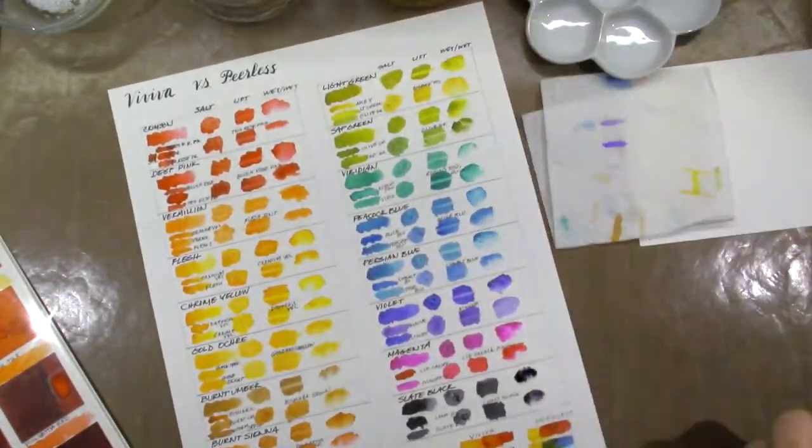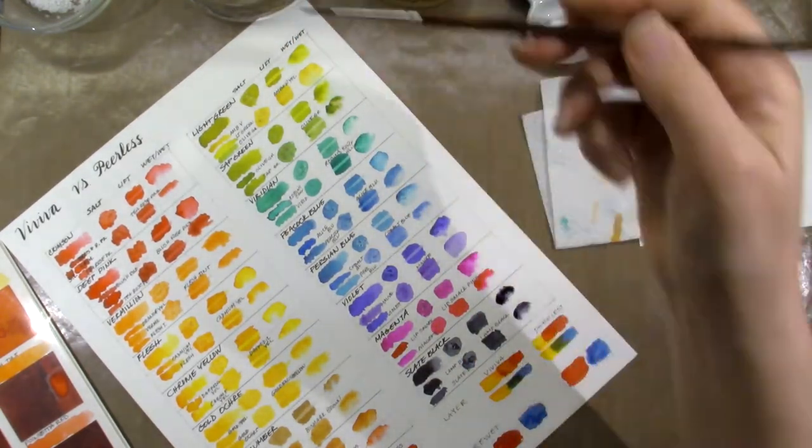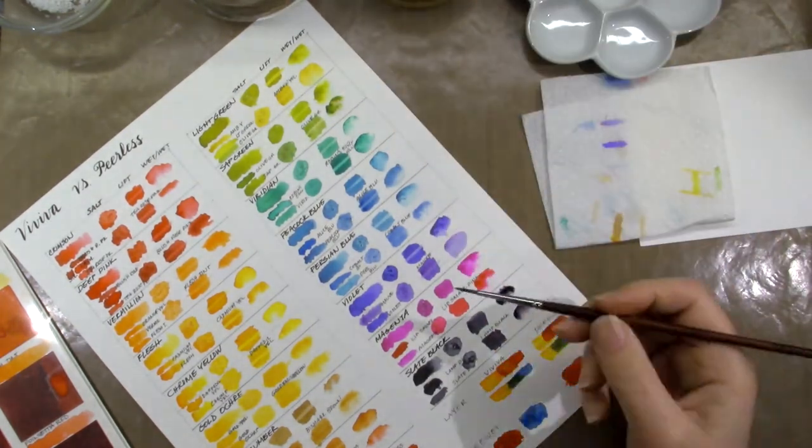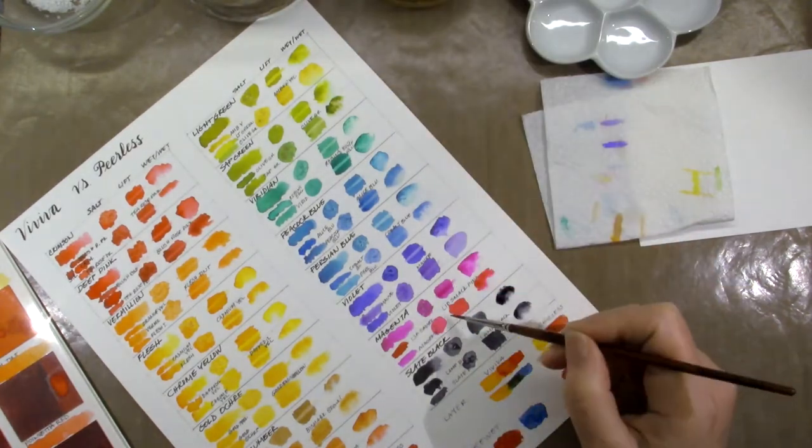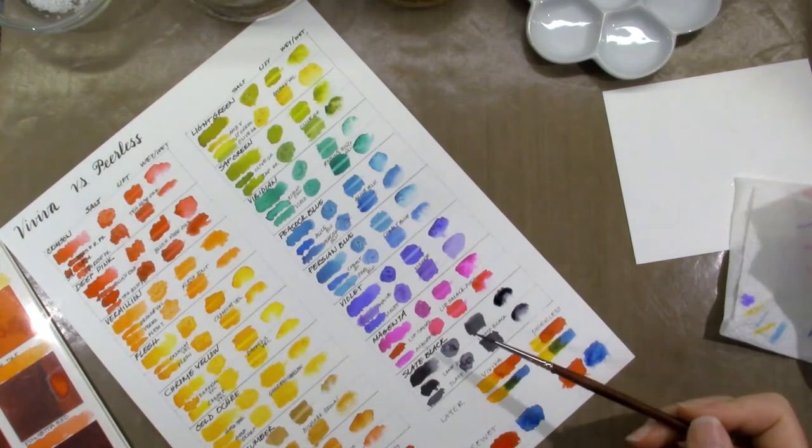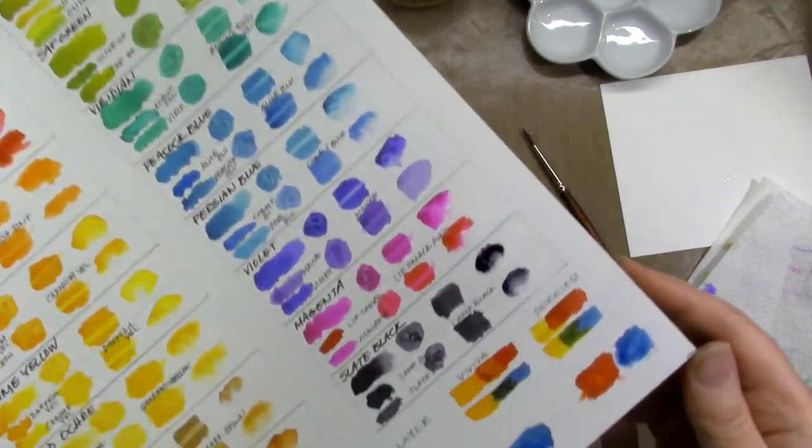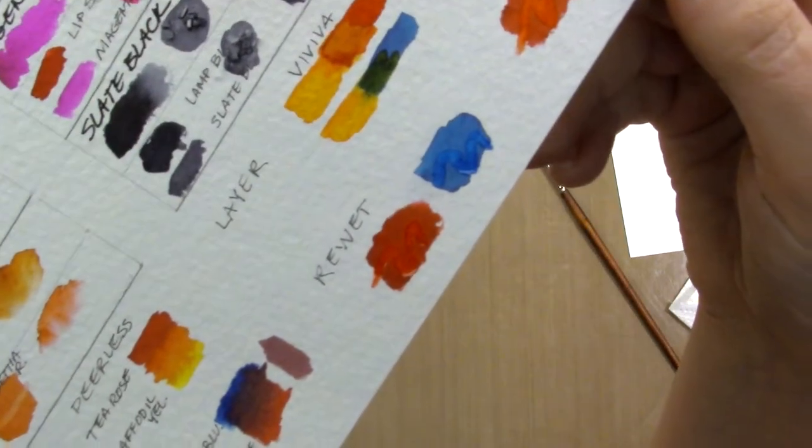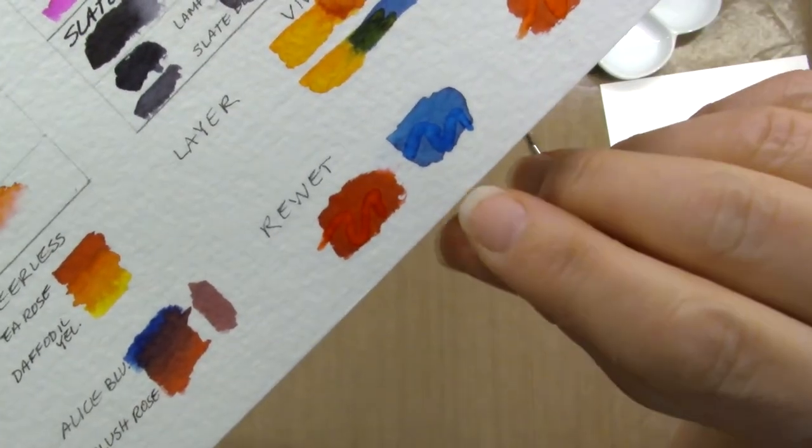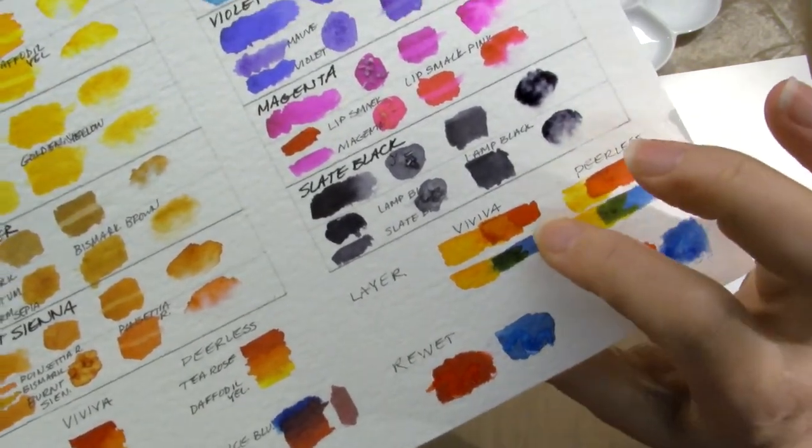When I brushed clean water across dried paint, in both cases, the paint was pushed away, forming a darker line when the paint dried. This is how I did the lift test for all the colors. I just swiped clean water across the swatch, let it sit for a few seconds, then soaked it up with a paper towel. Here's a close-up of the layering and the re-wetting test. You can see already that the color is being pushed away and hasn't even fully dried. And there's a look at how opaque the color became on the Viviva side.